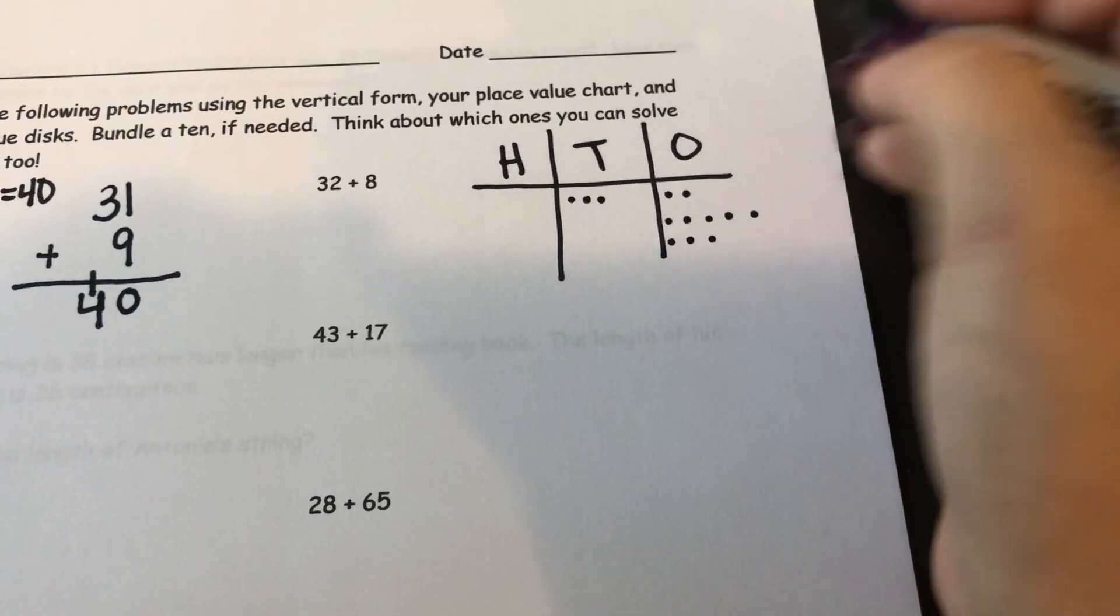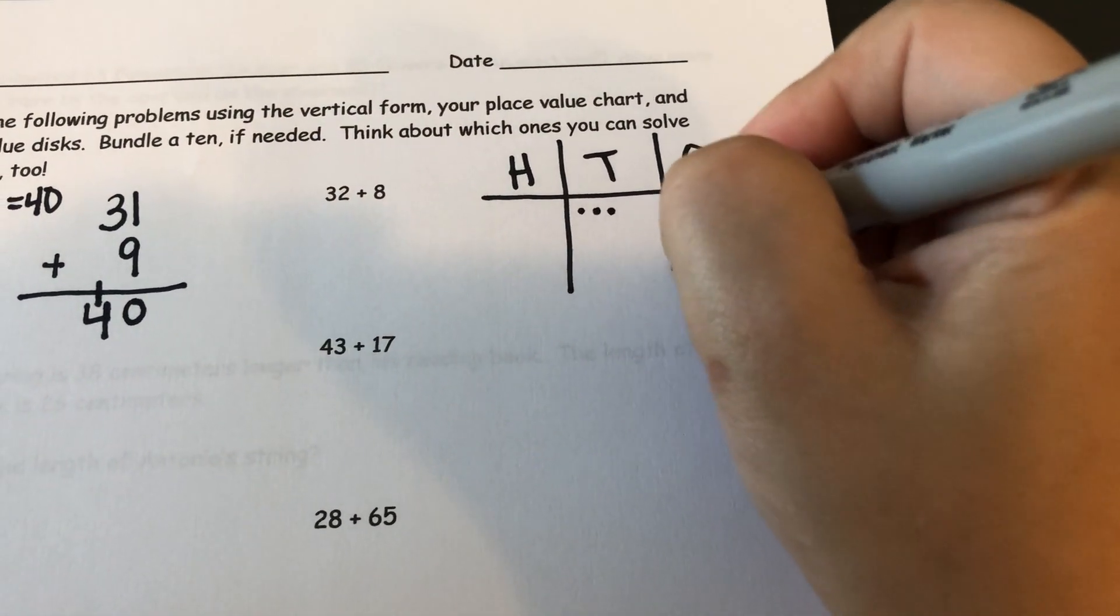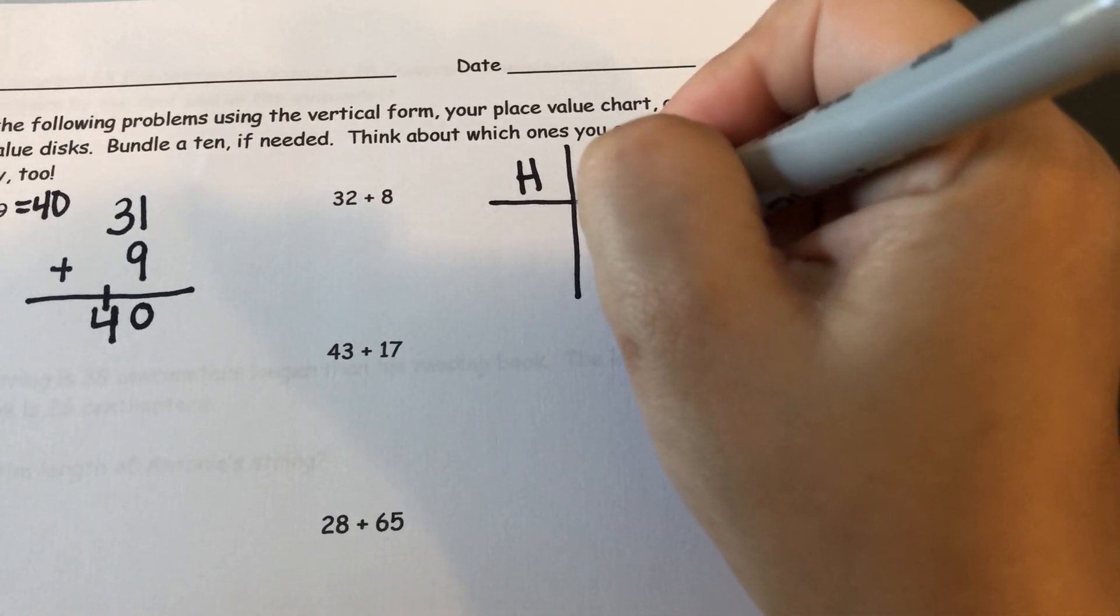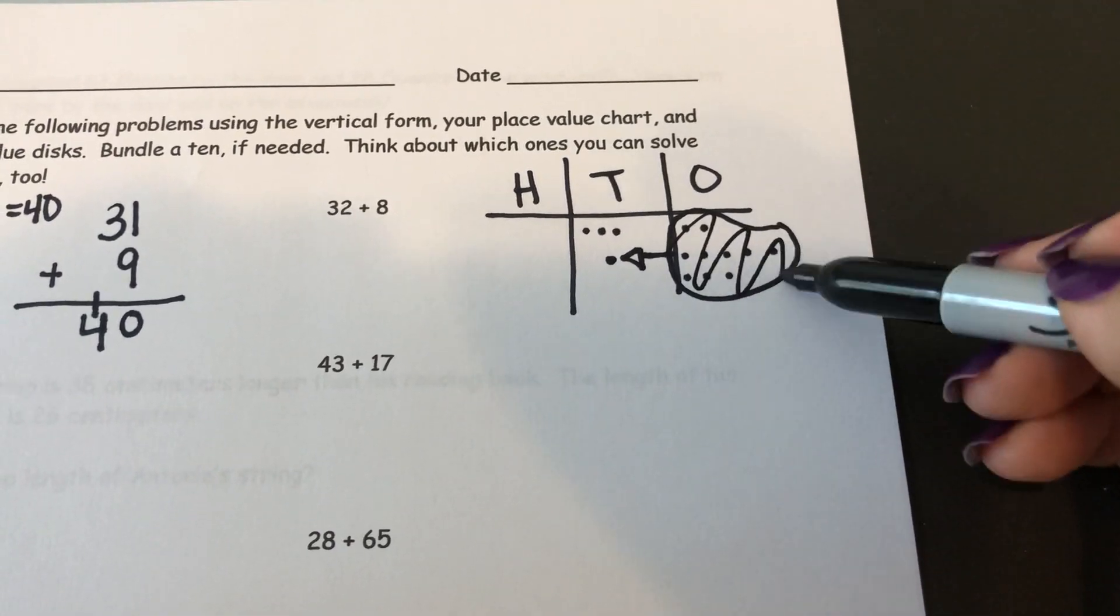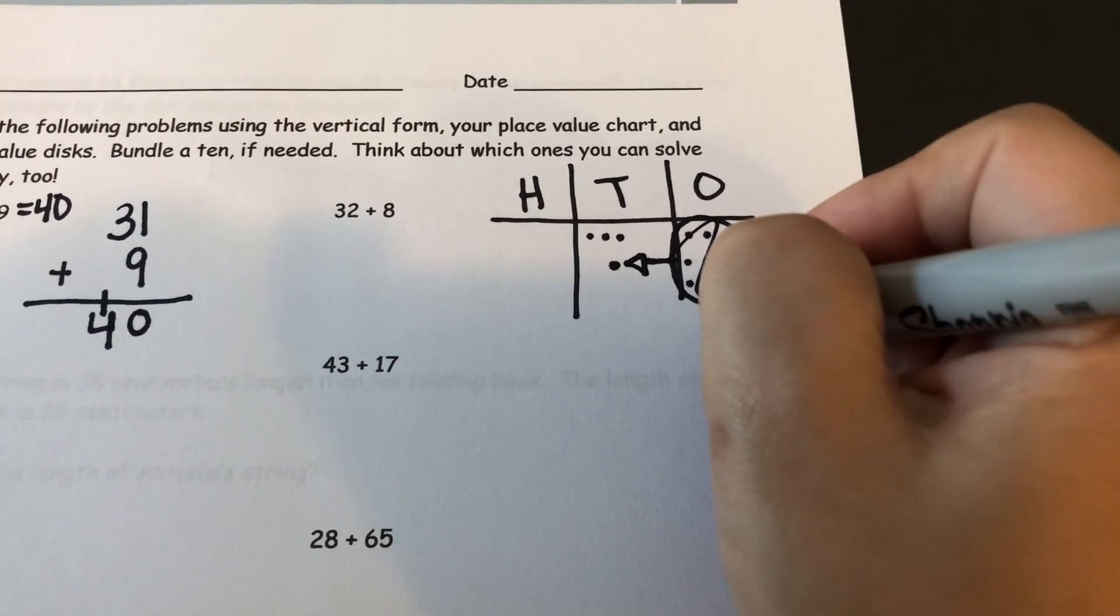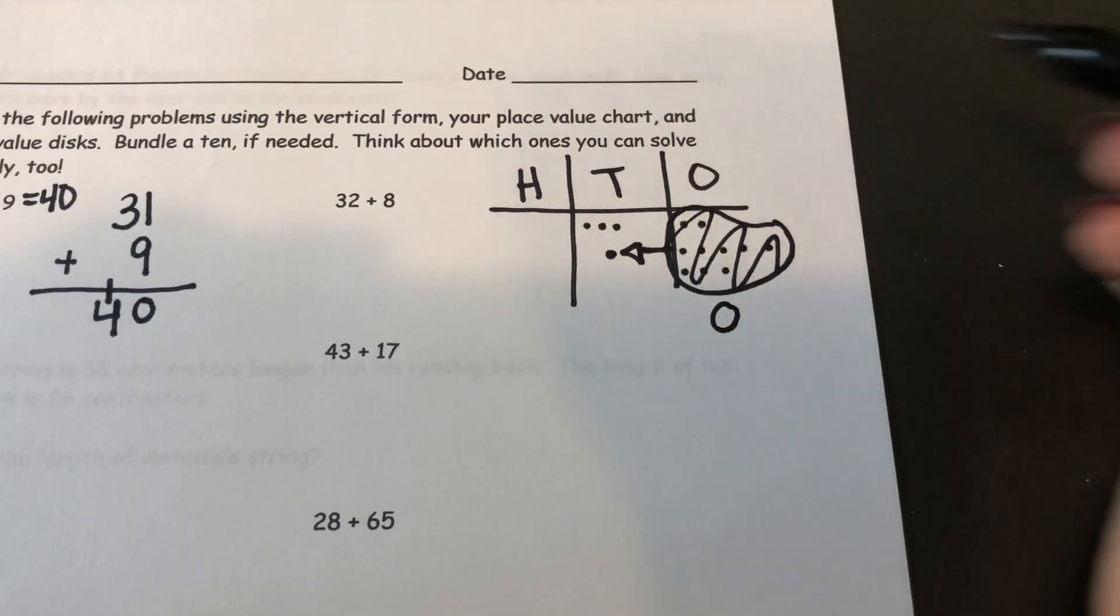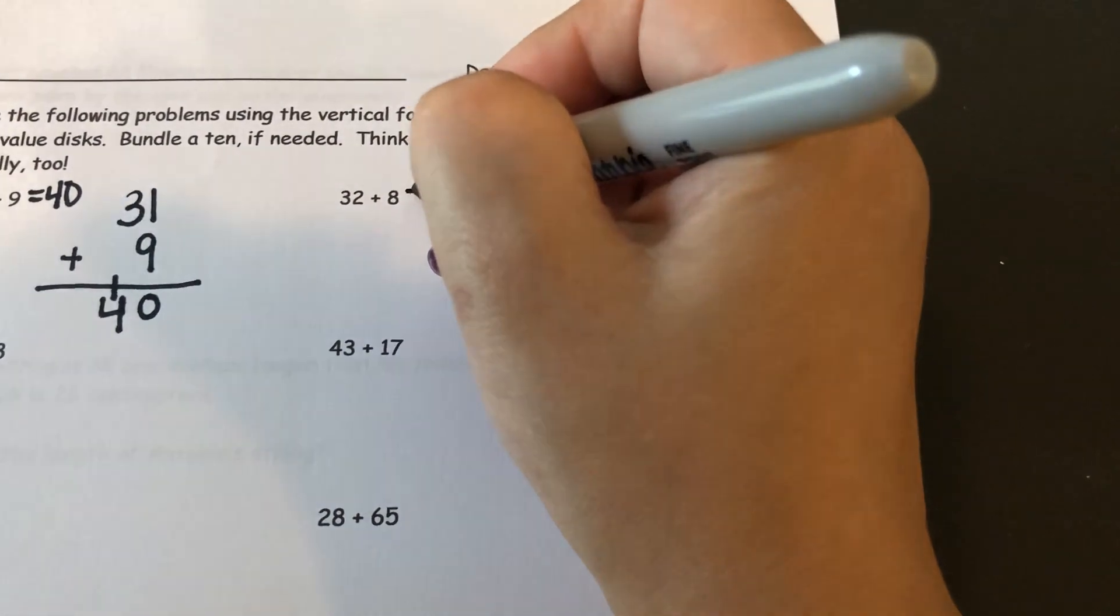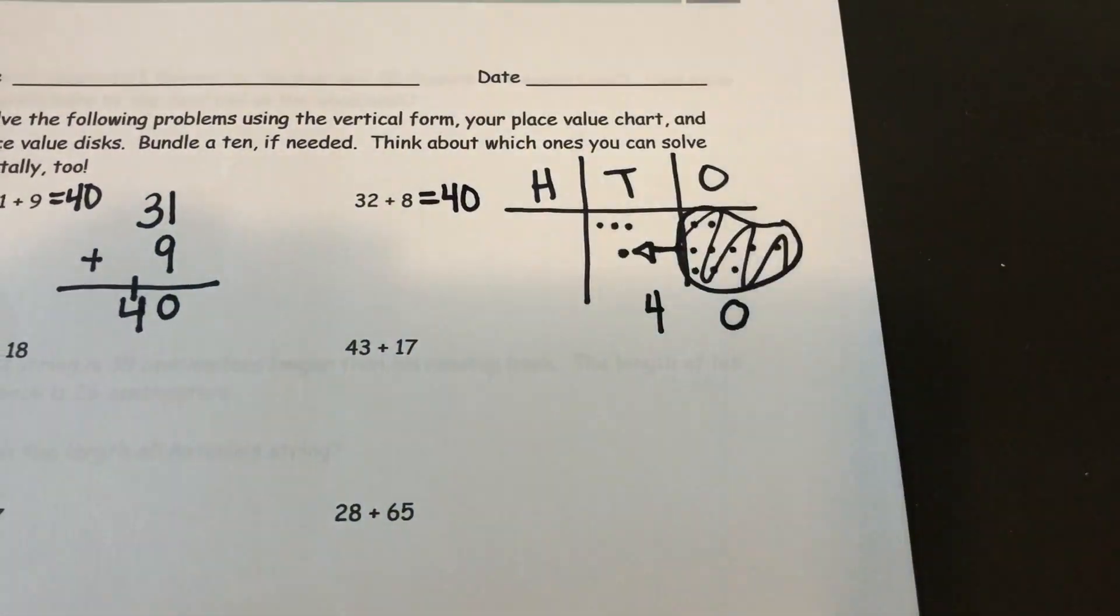I know that 8 plus 2 gives me a 10, so I bundle 10 ones together. I turn them into 1 ten, so I no longer have 10 ones. And actually there's no leftover ones either. So I have 0 in my ones place and I have 4 in my tens place. 32 plus 8 is also 40.